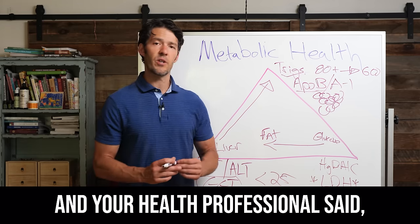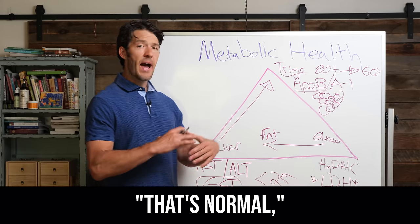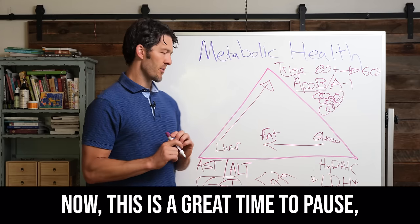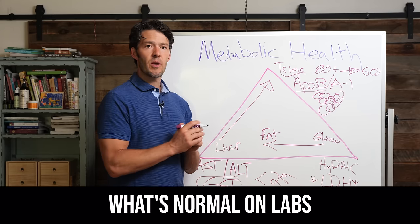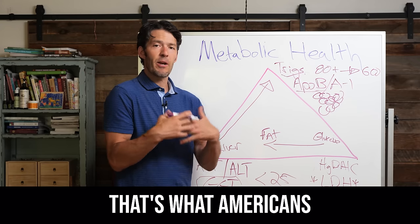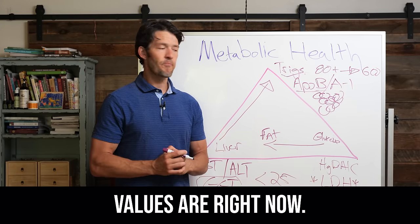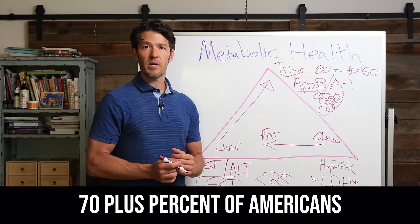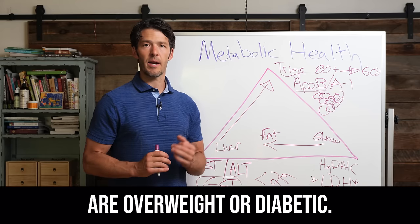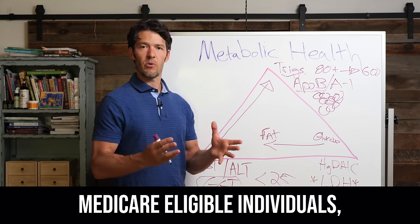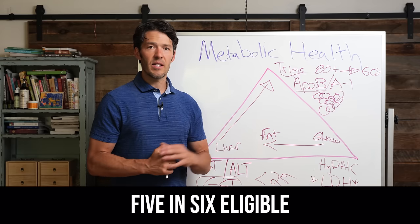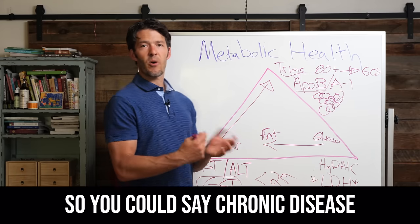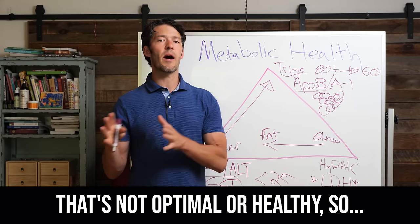So if your insulin level is 12 and your health professional said that's normal because of the lab range, this is a great time to pause. What's normal on labs? That's normal for what Americans' values are right now. What's normal is not ideal or optimal, because most Americans — 70-plus percent — are overweight or diabetic. Medicare-eligible individuals: five in six have three or more chronic diseases. So you could say chronic disease is normal. That's not optimal or healthy.